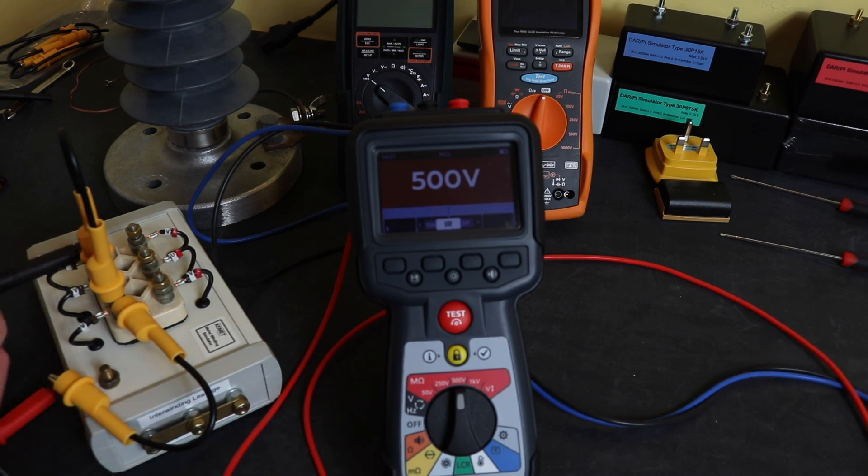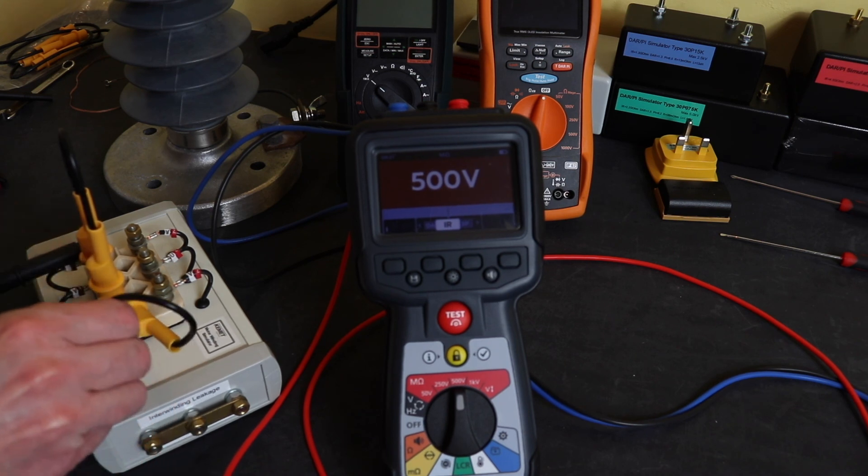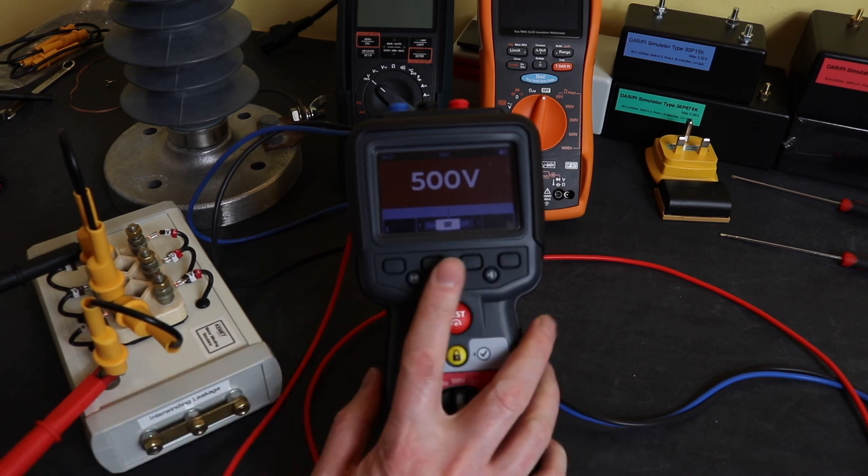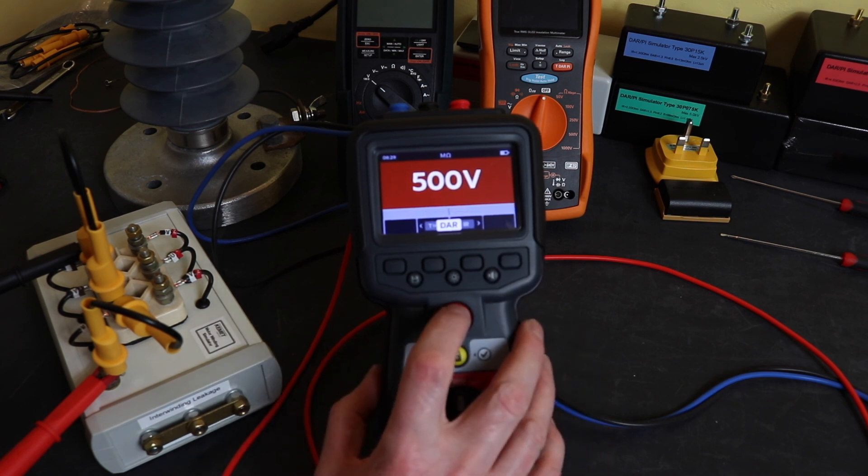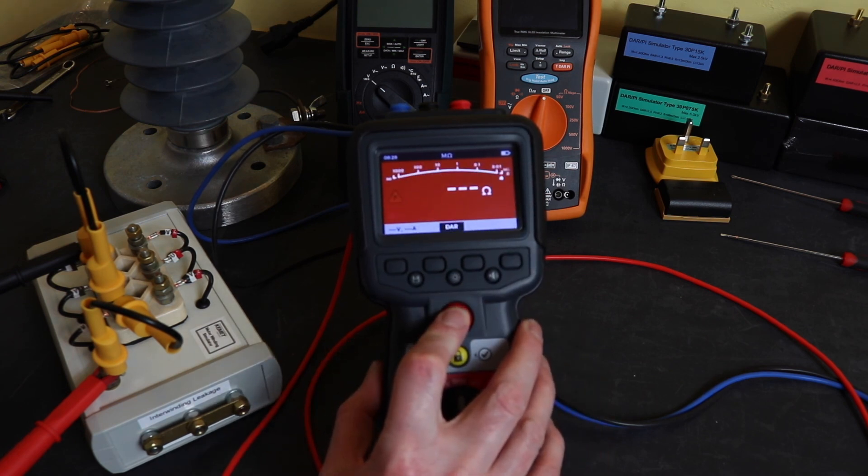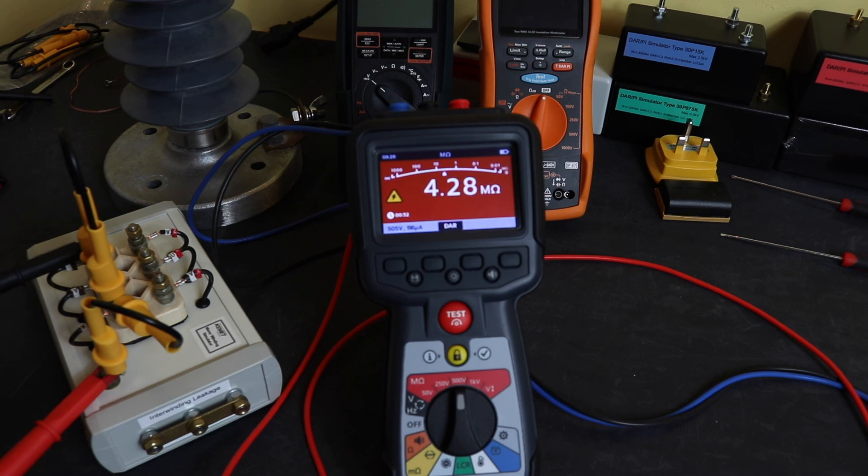I'll connect up to test and this will be for a standard test. Let's do a DAR test at 500 volts and set that off. This would be a standard test without using the guard terminal. I'm just wired to one winding, the two windings are shorted and then taken to earth.